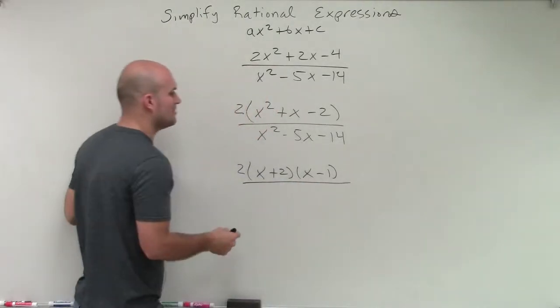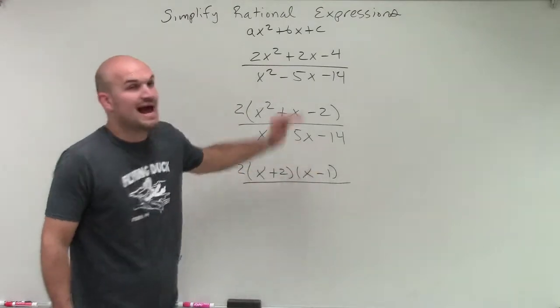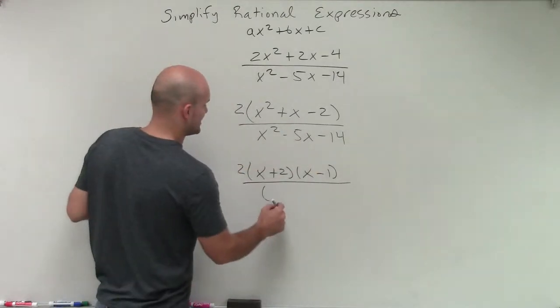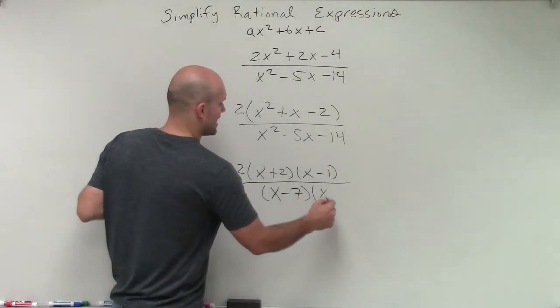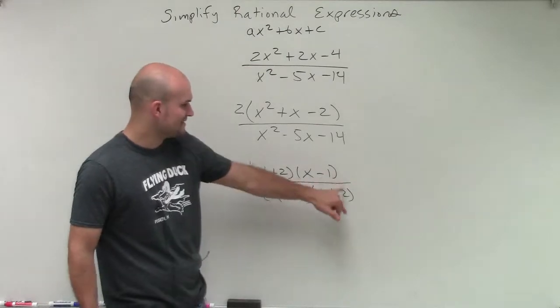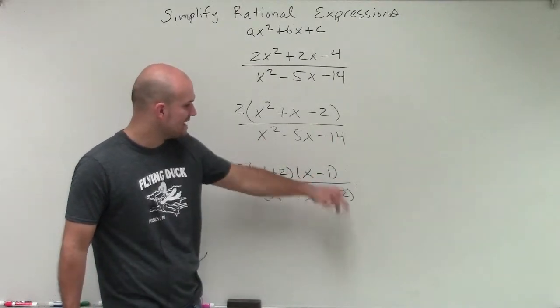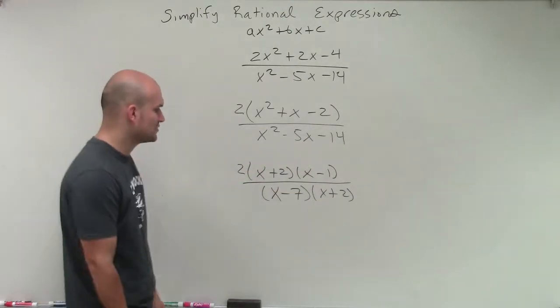Then let's go and look at the bottom. So I need to say, what two values multiply to give me negative 14, but then add to give me a negative 5. Well, that's going to be the factored form of x minus 7 times x plus 2. Because negative 7 times 2 gives you a negative 14, and negative 7 plus 2 gives me a negative 5. So it's factored correctly.